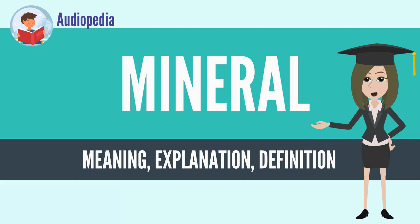Minerals are classified by key chemical constituents. The two dominant systems are the Dana classification and the Strunz classification. Silicon and oxygen constitute approximately 75% of the Earth's crust, which translates directly into the predominance of silicate minerals.